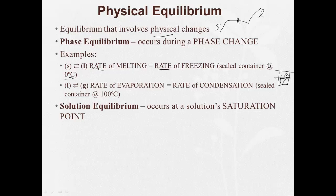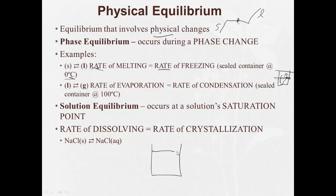Solution equilibrium occurs at the solution saturation point, where the rate of dissolving equals the rate of crystallization. Let's say you have water and you add so much salt that a little bit of it piles up on the bottom. Some of the salt will be constantly dissolving. Some of the salt that's in the water will be constantly precipitating out and forming that solid again.